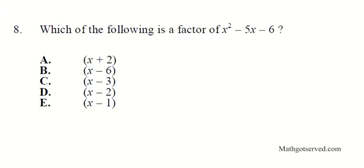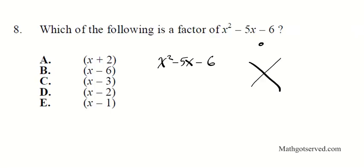Let's take a look at number 8. It says which of the following is a factor of x squared minus 5x minus 6? This is similar to what we just did. We're going to use the AC method again. We have a equals 1, b equals negative 5, c equals negative 6. So AC equals 1 times negative 6, which is negative 6, and b equals negative 5.